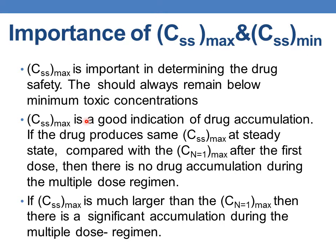CSS max indicates the extent of drug accumulation. In ideal cases, when there is no accumulation, if the drug produces the same CSS max at steady state — meaning steady state maximum is equal to C1 max after the first dose — then there is no accumulation during the multiple dosage regimen. When CSS max is much larger than C1 max, there is significant accumulation, which is usually the case.